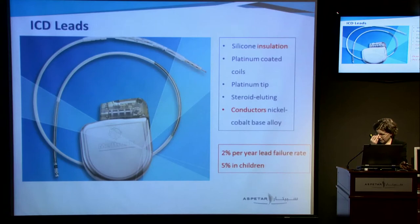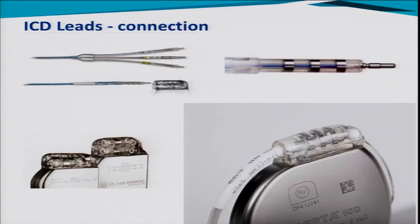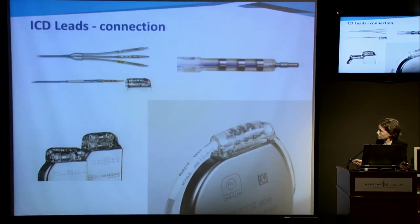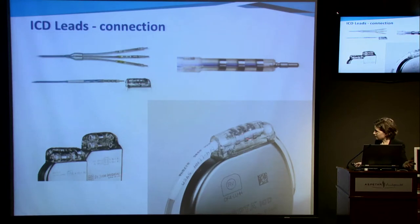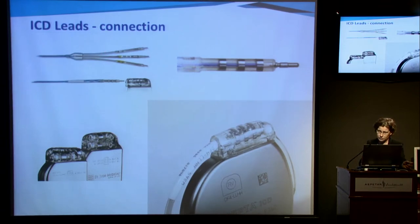The lead failure rate is not insignificant — it's 2% per year, and higher in the paediatric population. In terms of fixation, when you implant the tip of the lead into the right ventricle, there are two ways it can stay in situ. The vast majority of ICD leads use active fixation — a helix at the end of the lead that is literally screwed into the myocardium. The connection at the top has now been integrated into one easy-to-implant connection, which goes into the header box, making it much more comfortable for the patient and easier to implant.